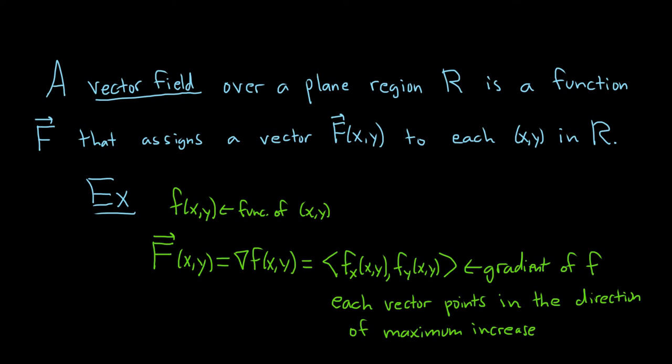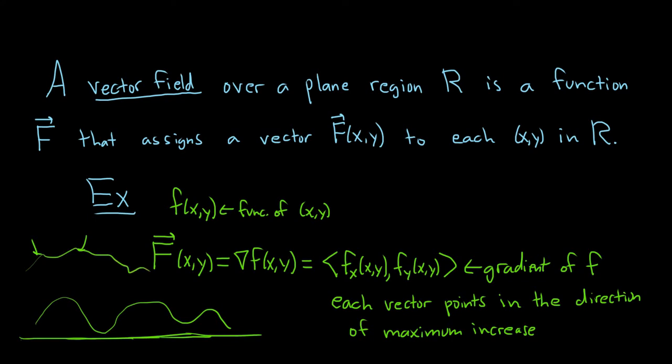One way to think about the gradient: pretend you're standing on a hill, and the base is a flat plane below you. The hills are represented by the graph z = f(x, y), a 3D surface. The gradient is a vector in the x, y plane that tells you which way to go to climb the hill as fast as possible — it points in the direction of maximum increase. So the gradient is like a compass: it tells you which direction to ascend as fast as possible.